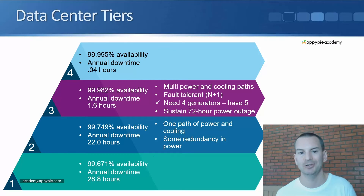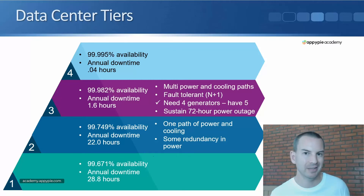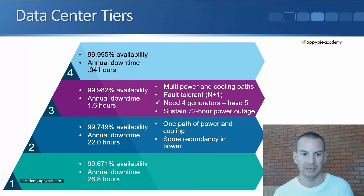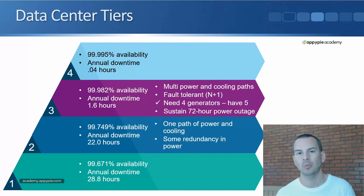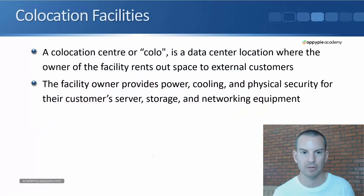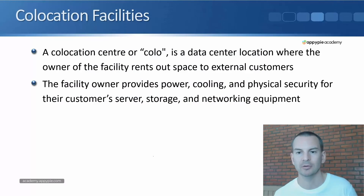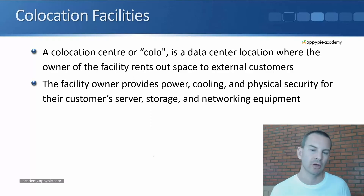Then we have the highest level — a tier four data center that has an annual downtime of just 0.4 hours. Obviously, the higher the tier, the more expensive it's going to be to build that facility. If you want to have a highly available facility and you're building it yourself, that's obviously going to be a huge upfront capital expenditure cost. A way that you can make this more affordable is by using a co-location facility. A co-location center, or colo, is a data center location where the owner of that facility rents out space to external customers.